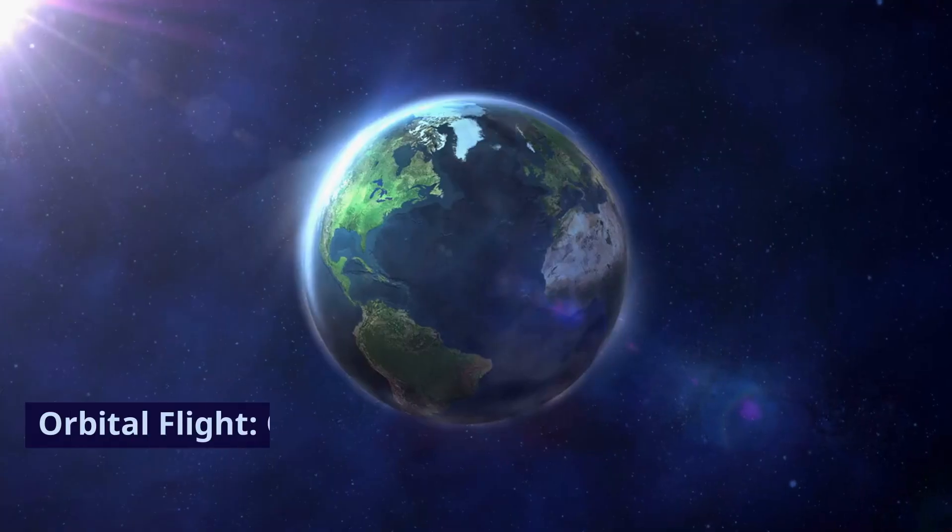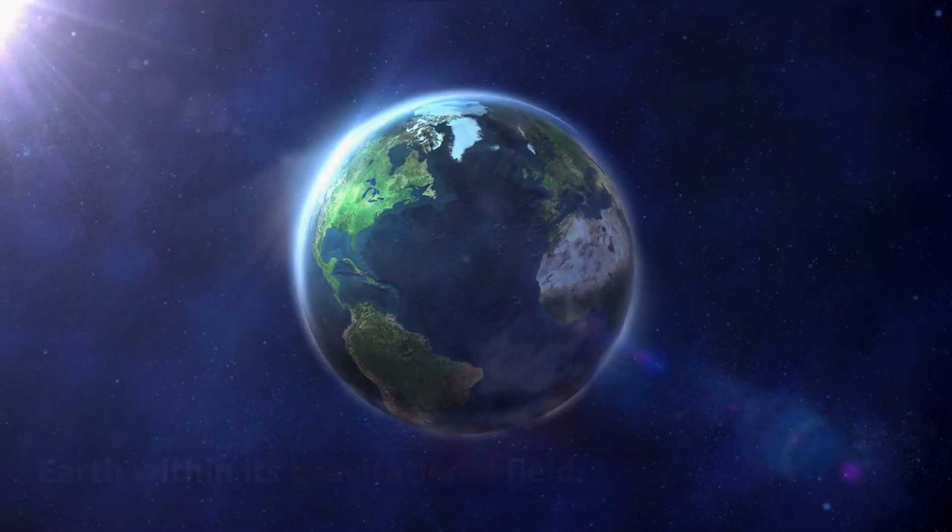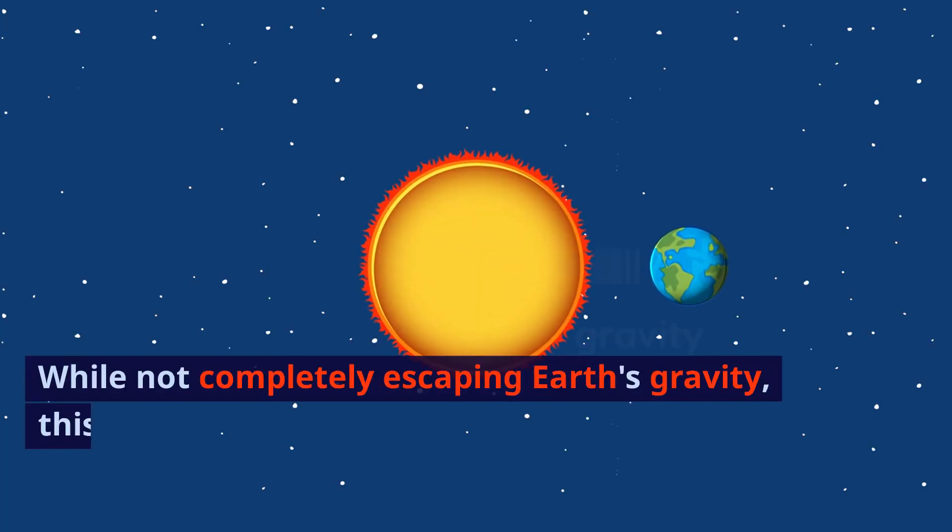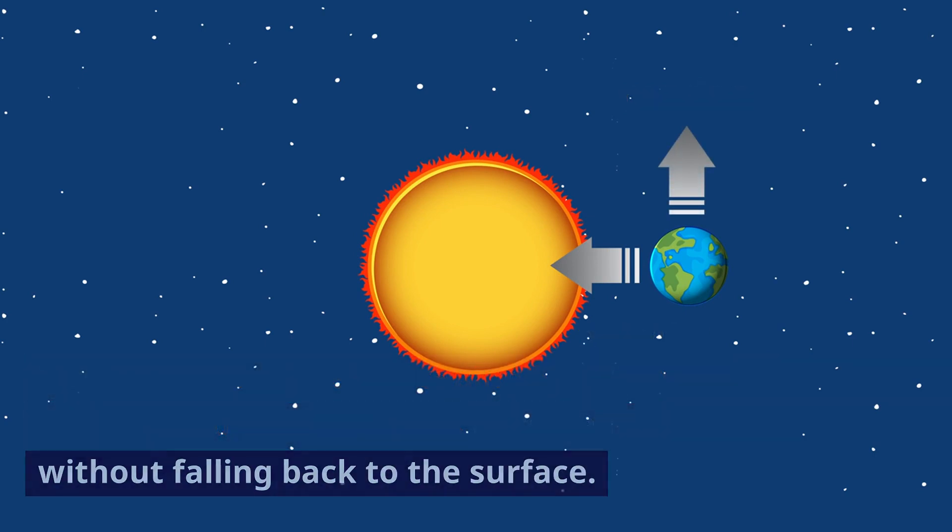Method 2: Orbital flight. Orbital flight involves orbiting the Earth within its gravitational field. While not completely escaping Earth's gravity, this method allows objects to remain in orbit without falling back to the surface.